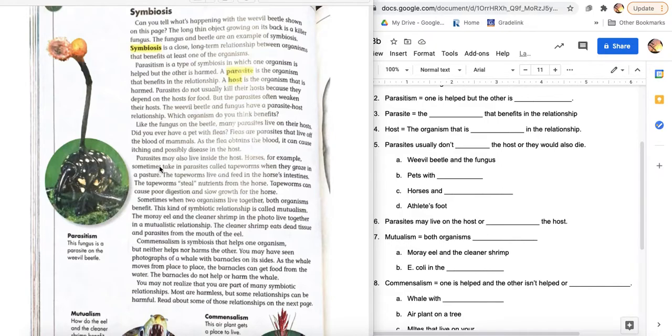Horses, for example, sometimes take in parasites called tapeworms when they graze in a pasture. The tapeworms live and feed in the horse's intestines. The tapeworms steal nutrients from the horse. Tapeworms can cause poor digestion and slow growth for the horse.